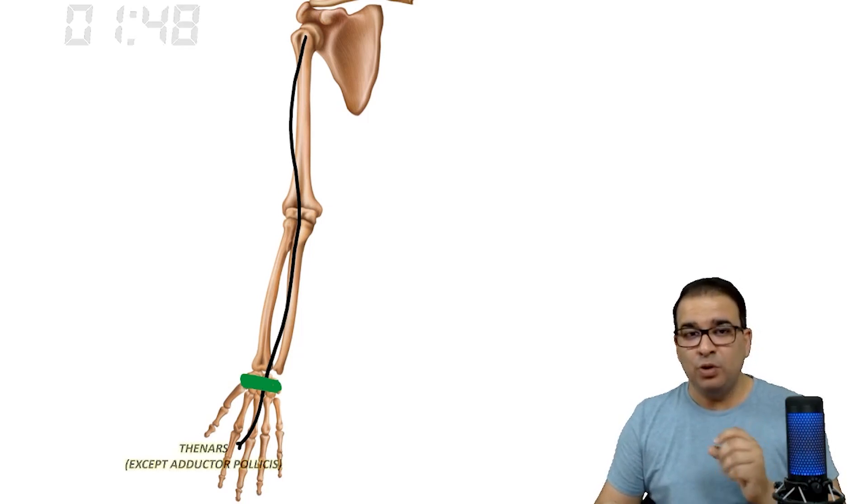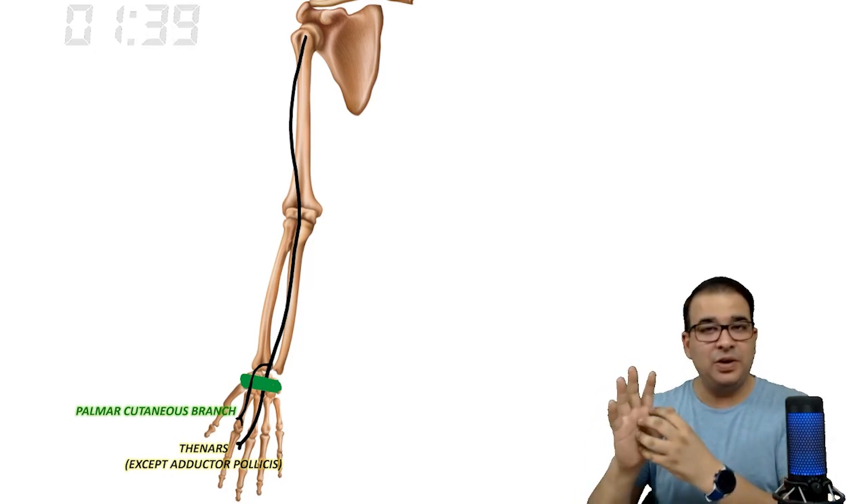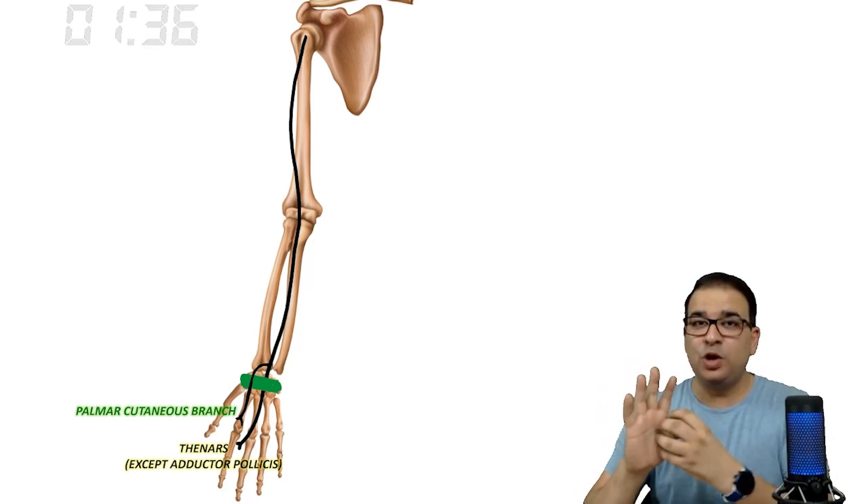Median nerve before entering deep to the flexor retinaculum gives off a branch called the palmar cutaneous branch that supplies skin on the lateral three and a half side of the palm, but not the fingers, only of the palm.